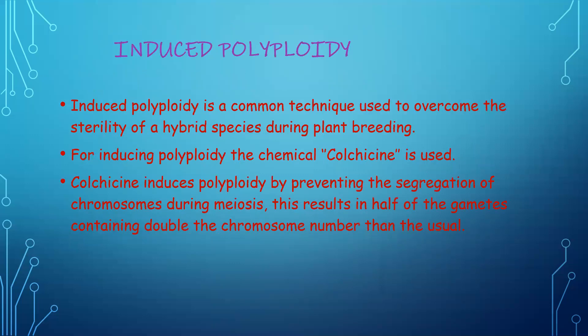Induced polyploidy is a common technique used in plant breeding to overcome the sterility of hybrid species. The chemical commonly used in inducing polyploidy is colchicine. Colchicine induces polyploidy by preventing the segregation of chromosomes during meiosis, resulting in half of the gametes containing double the usual number of chromosomes.